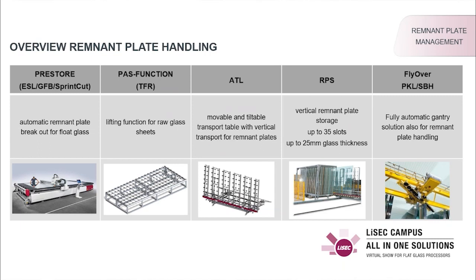Our horizontal transport table TFR can be equipped with a pass function — this option can lift raw glass sheets and the remnant plate can pass through. LiSEC's tiltable transport table ATL can be equipped with a vertical transport for remnant plates. For the storage of remnant plates, LiSEC offers the RPS, a vertical half-rack with up to 35 slots and up to 25 mm glass thickness. It is also possible to store several remnant plates in one slot. Our flyover system PKL in combination with an SPH can also handle remnant plates.